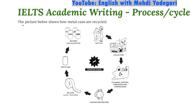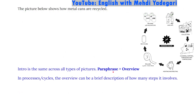What you're given here says: 'The picture below shows how metal cans are recycled.' This is the prompt that we're given. Regardless of what the picture is — whether it's a trend like a graph or any other picture — the first paragraph is the same in all of them, which includes, as you'll remember from our previous videos, the paraphrasing of the prompt and the overview of the picture.